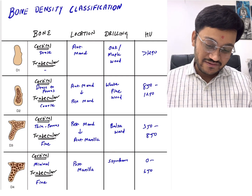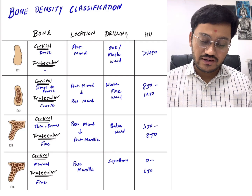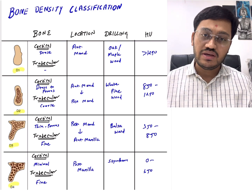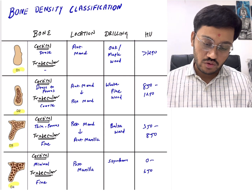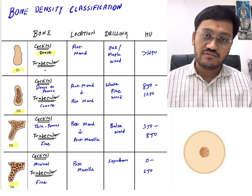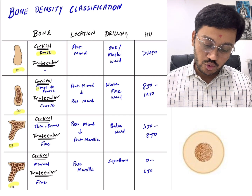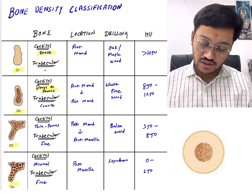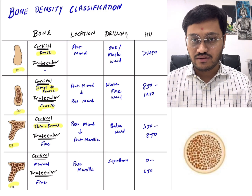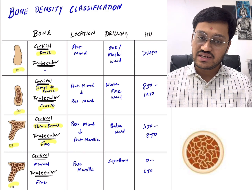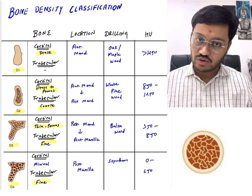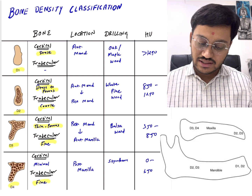Let's see bone density classification as given by Misch. Misch has classified bone into D1, D2, D3, and D4 types based on the cortical and trabecular pattern within the bone. D1 has dense cortical bone with very minimal or no trabecular bone. D2 has dense to porous cortical bone with coarse trabecular bone. D3 has thin porous cortical bone with very fine trabecular bone. D4 has minimal or sometimes no cortical bone with very fine trabecular bone.